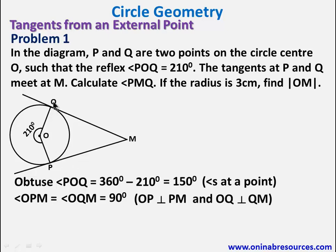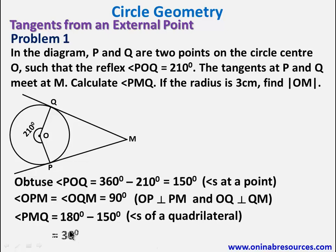And also OQ, another radius, is perpendicular to QM. So from here, we can calculate this angle PMQ. So angle PMQ will be 180 minus 150 degrees. Since this plus this plus this is 360 and this is 90, that is sum of angles of a quadrilateral. So PMQ is 30 degrees. So we are done with the first part of the problem.